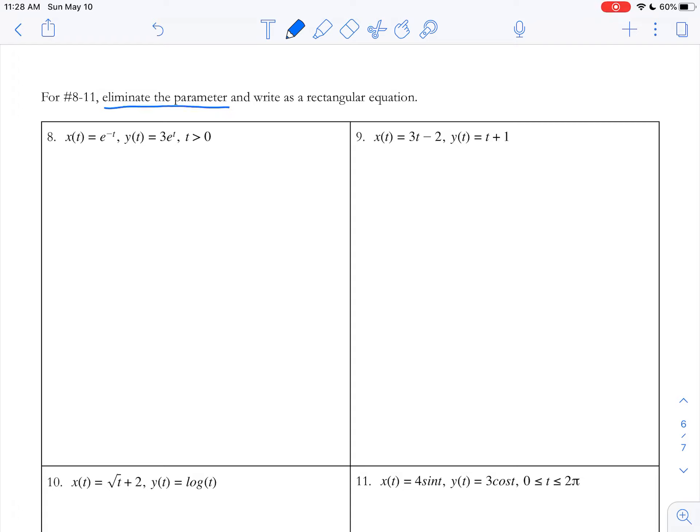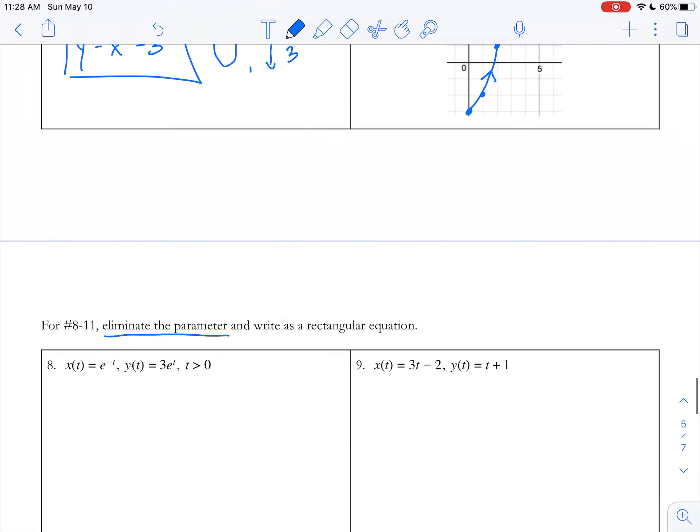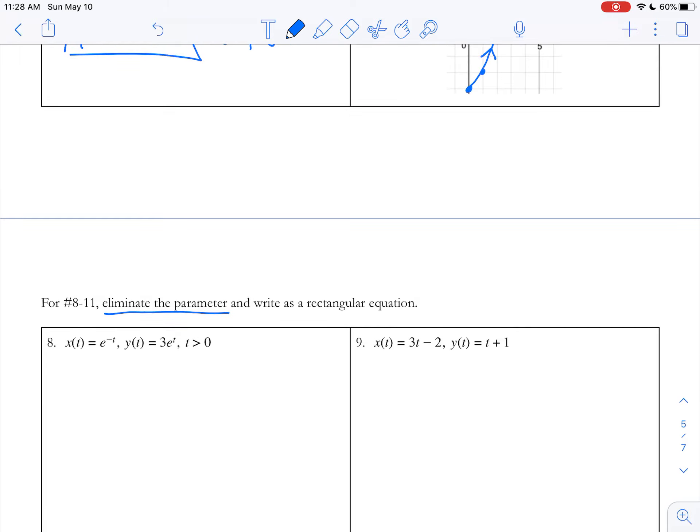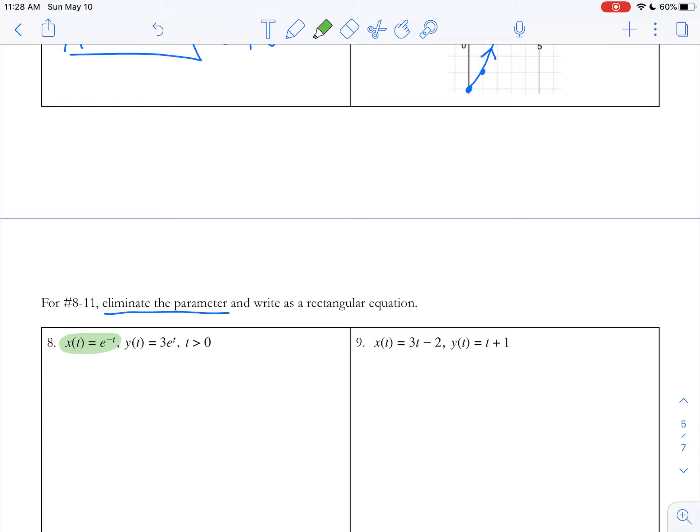Let's move on to some practice problems where we're just practicing eliminating the parameter and writing our final equation as a rectangular equation. In other words, we're going to get rid of all the t's in the equation. Let's get started with number 8.